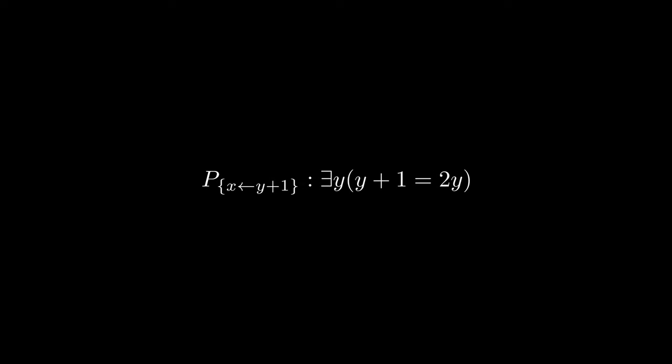The formula would become exists y such that y plus 1 equals 2y and its meaning would have changed. This happened because the variable y from y plus 1 became bound when inserted into the quantified formula, which should not be allowed. To prevent this, let's define some rules for substitutability.